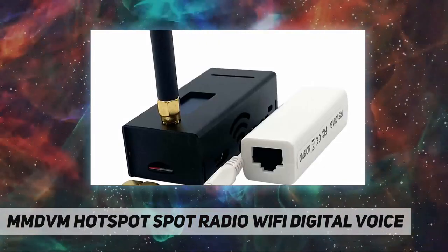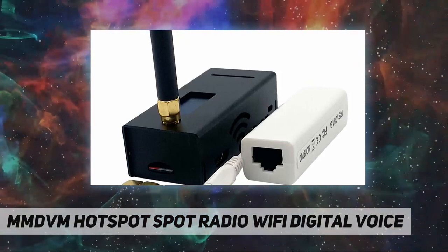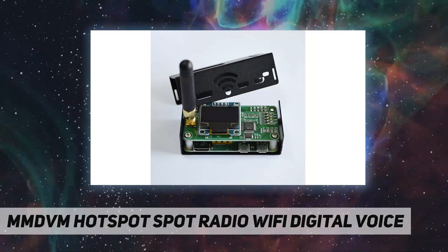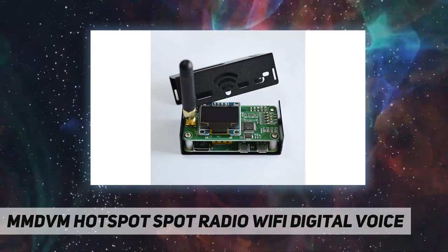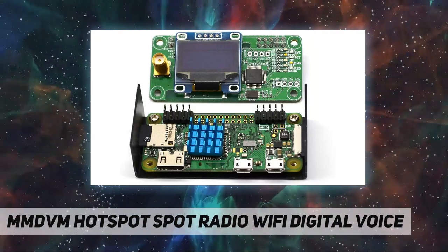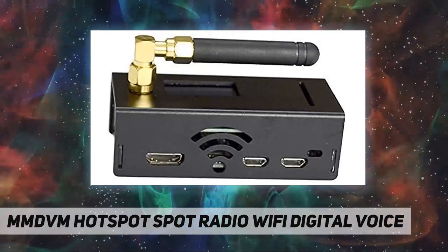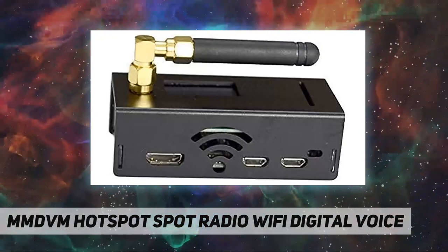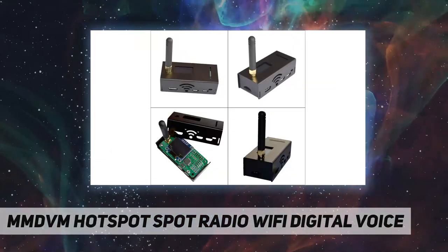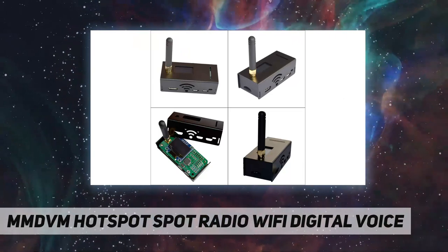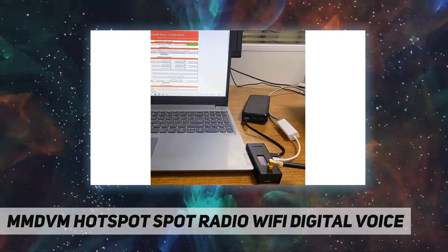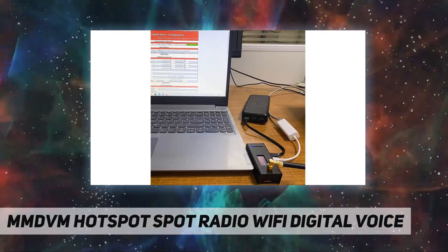Q&A: Why does it connect to Wi-Fi the first time but fail the next time? When you first set up the MMDVM hotspot, it will generate a Pi-Star setup hotspot which you connect to, then visit 192.168.50.1 for configuration. If you connected to your home network Wi-Fi, it will remember your home Wi-Fi. Therefore, when you open Pi-Star and try to update your configuration, there will be no Pi-Star Wi-Fi broadcast.